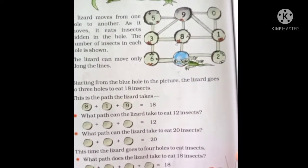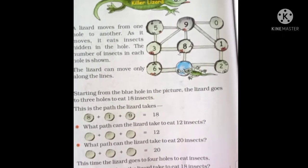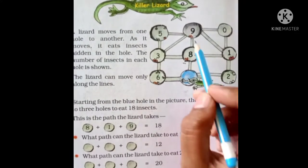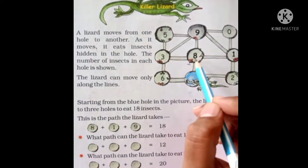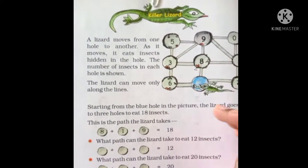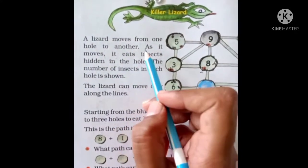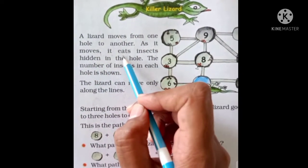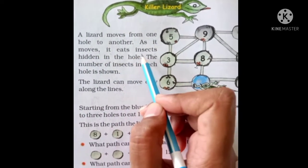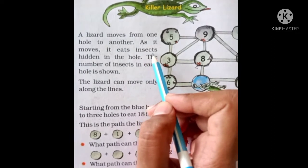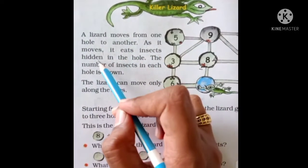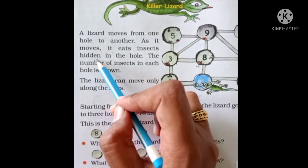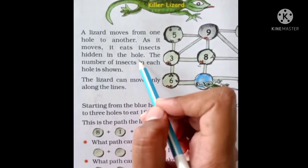Page number 82. Can you see this here? This circle is the hole. As it moves, it E-A-T-S, it eats I-N-S-E-C-T-S, insects H-I-D-E-N, hidden in the hole.